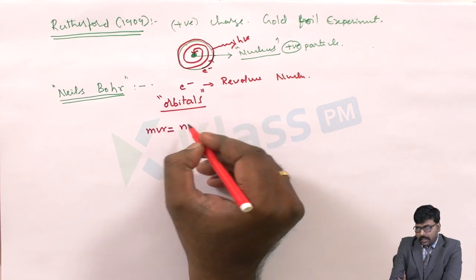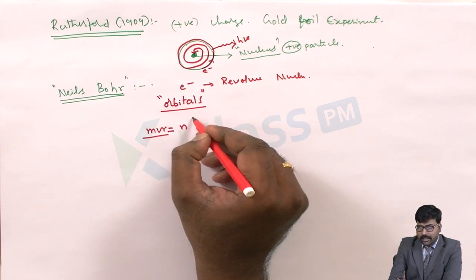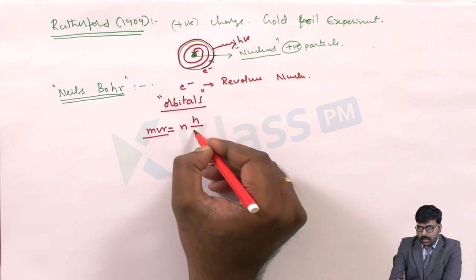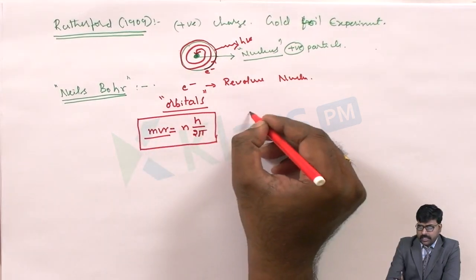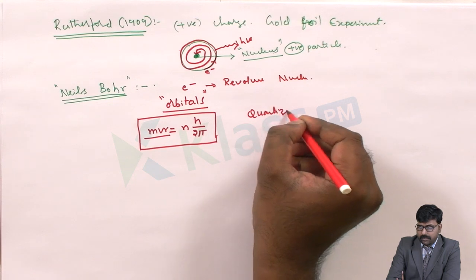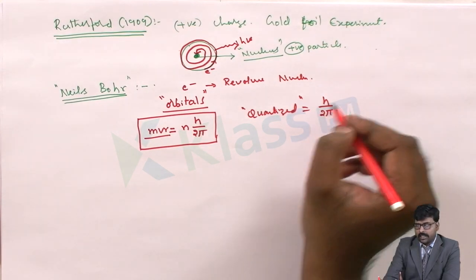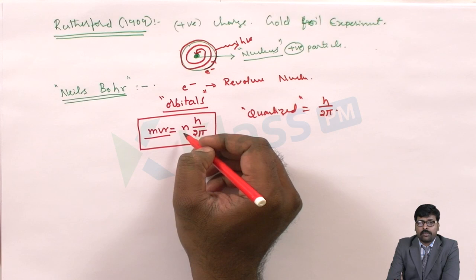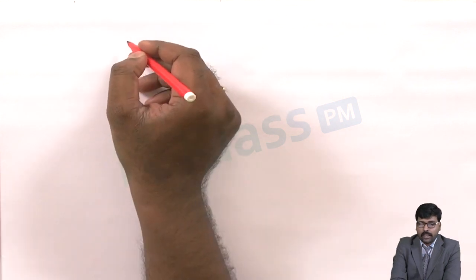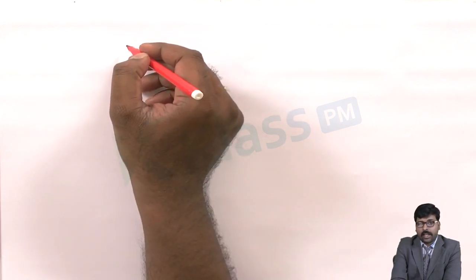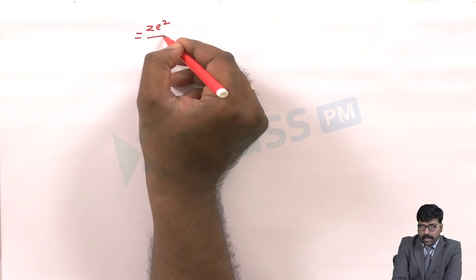Bohr stated that the angular momentum of the electron, MVR, is quantized and will be a multiple of h/2π. This clearly explains the energy levels of the hydrogen atom. Niels Bohr also successfully explained the electrostatic force between the electron and the nucleus by the equation ze²/r².